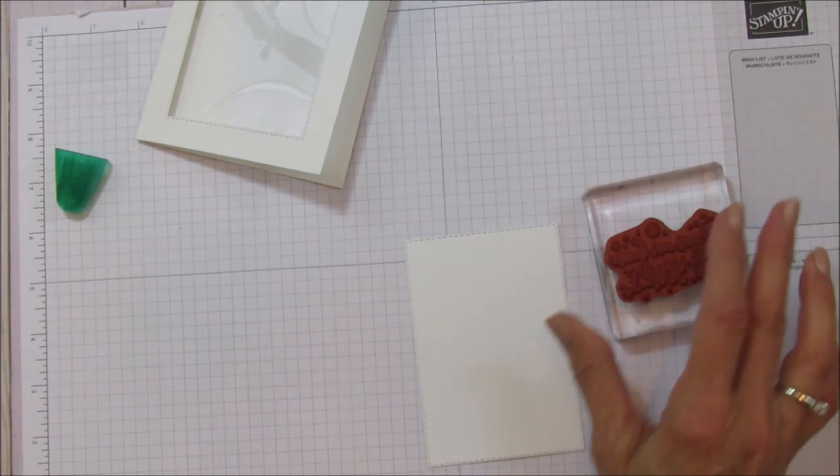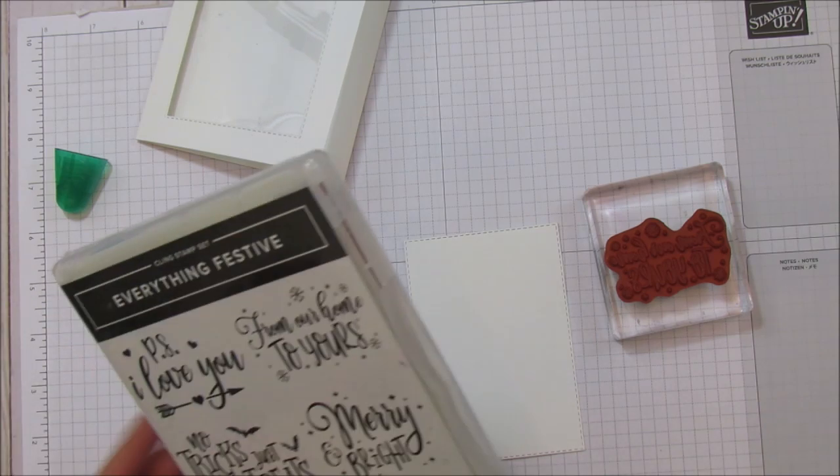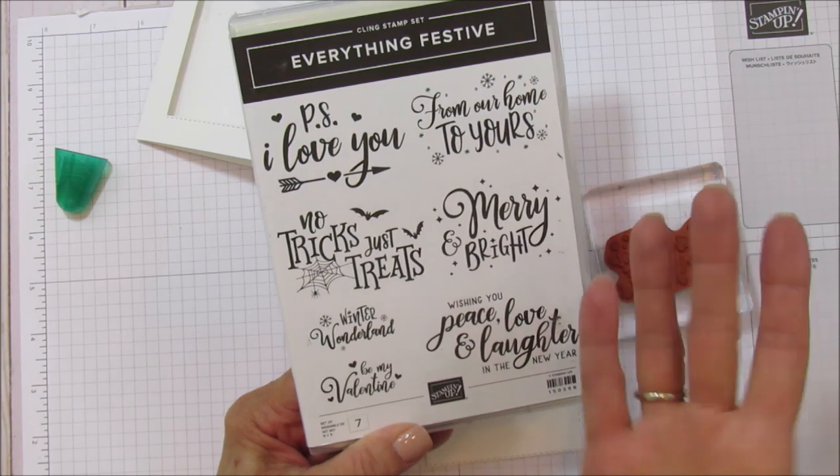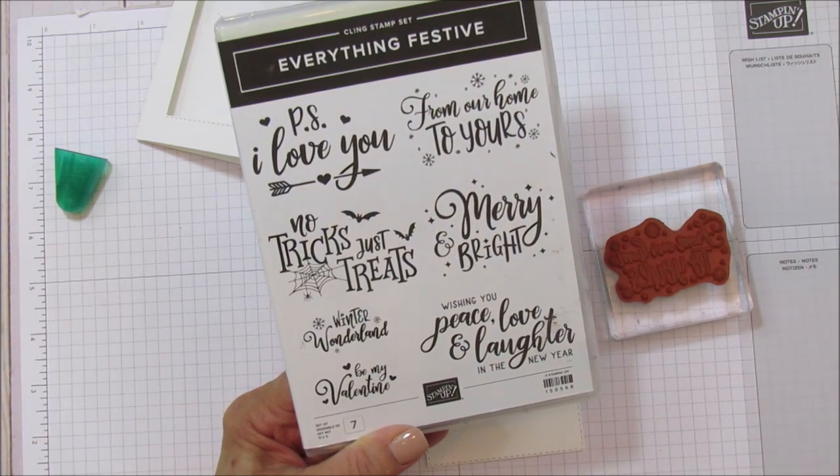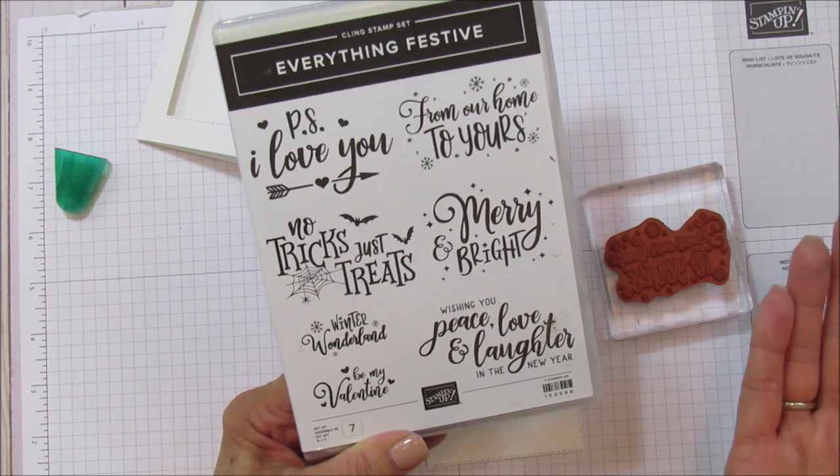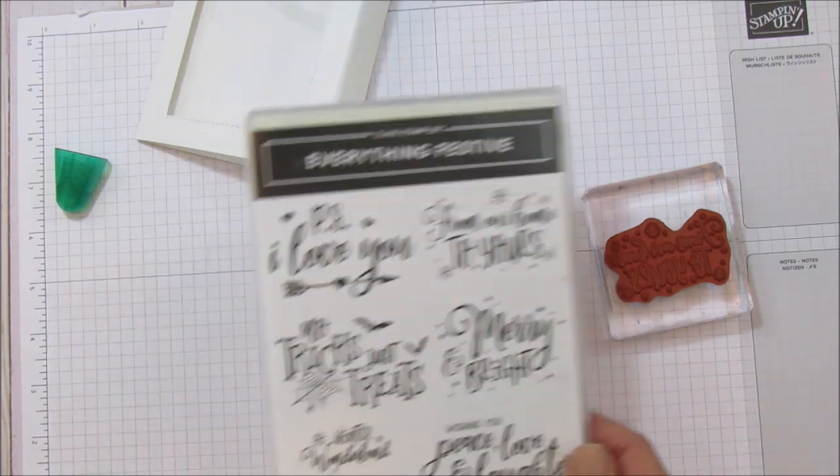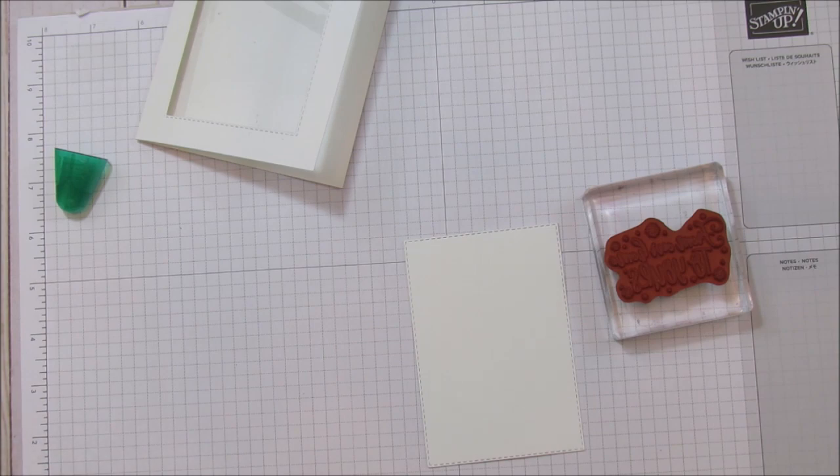Alright, so there's our window. It's very very easy to do. Then we're going to go ahead and stamp this piece right here. We're going to do the from our house to yours which is from the Everything Festive. This is one of my favorite—you can use this for several occasions: Valentines, trick-or-treat, from our house to yours just plain for a party or anything like that.